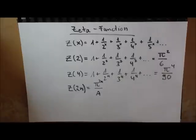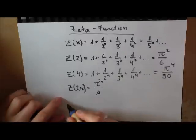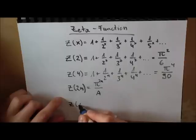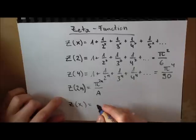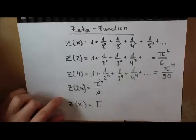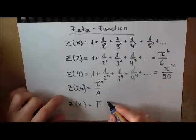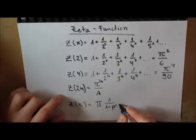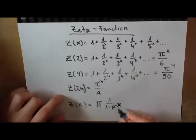And this product looks very strange. It looks like the product from i equals 1 to infinity of 1 over 1 minus p_i to the minus x, and this is over all the prime numbers.